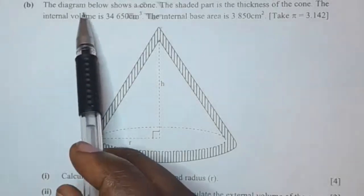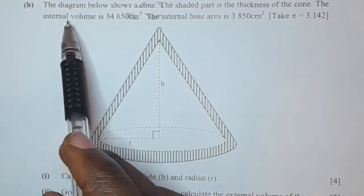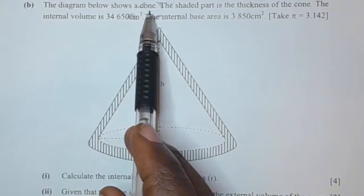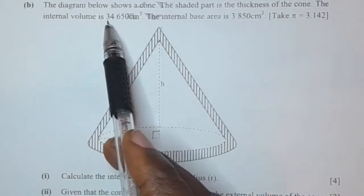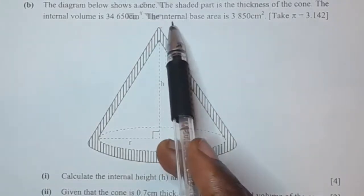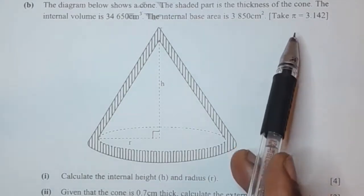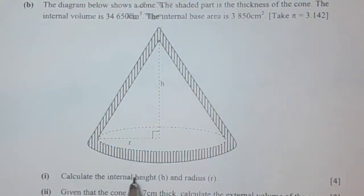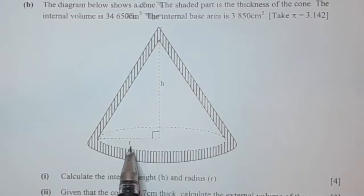Hello, in this video we're going to look at this exam question. The information given is as follows: the diagram below shows a cone, the shaded part is the thickness of the cone, the internal volume is given, and the internal base area is also given. Take pi to be 3.142. The question asks us to calculate the internal height h and the radius r.